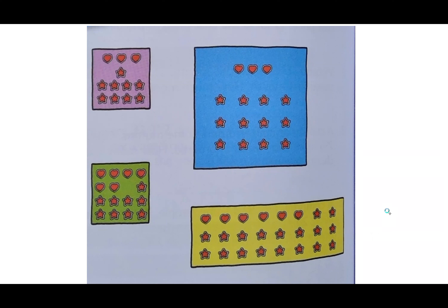We're looking at the pink sheet right now. We're looking for a fraction for the pink sheet — we want to write the number of hearts over the total stickers. So for the pink sheet, how many heart stickers do we have, and how many total stickers? We have 3 hearts and 12 total. The fraction bar means 'out of,' so 3 out of 12 stickers are hearts. Can we simplify that? Yes — that's actually one-fourth.